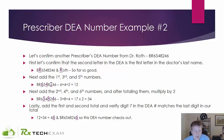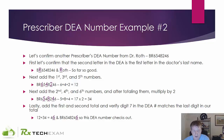Let's take a look at another one. Here we have BR6548246 — Dr. Roth. The R is good. We're going to add the first, third, and fifth numbers: 6, 4, and 2, which adds to 12. Now we add the second, fourth, and sixth: 5, 8, and 4, giving us 17, times 2 equals 34. 12 and 34 add together to 46. 6 is the last digit in 46, and 6 is the last digit in our DEA — this checks out.